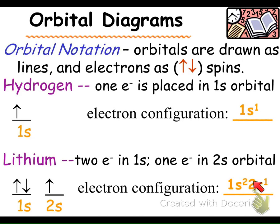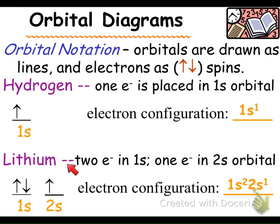For lithium, the electron configuration is 1s2, 2s1, so we have two s orbital shapes, one per energy level. The 1s has two electrons, represented by an up and a down arrow. The 2s1 has one electron, shown as one up arrow. Most of the time you'll see the up spin drawn first, but it isn't wrong to draw the down spin first.